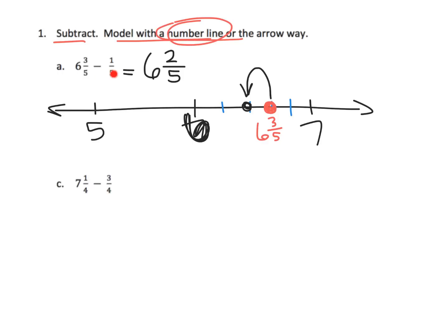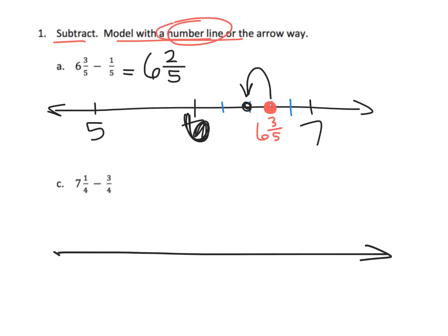Students might just see the pattern — three-fifths take away one-fifth is two-fifths — but we don't want them jumping to that rule too quickly. We really want our students using a number line at this point, not jumping straight to some sort of algorithm.